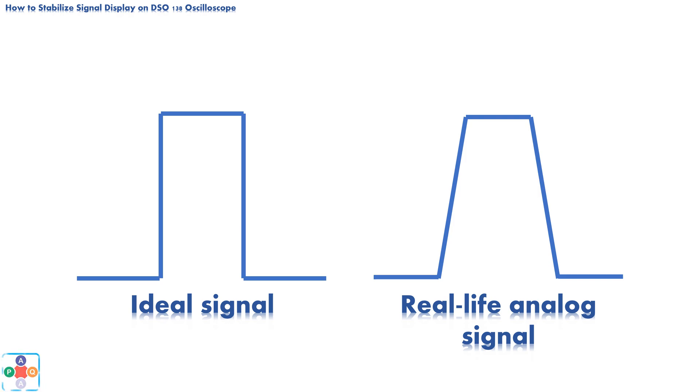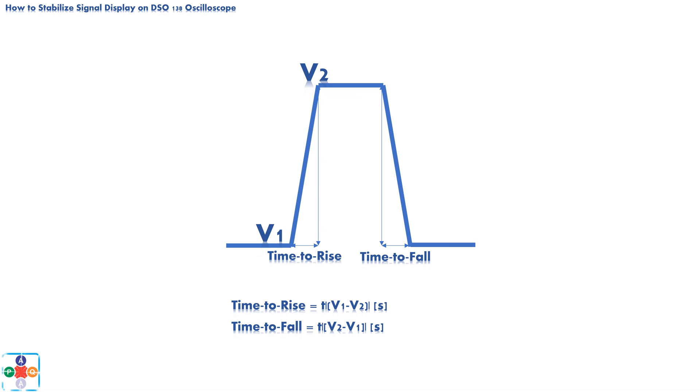This leads us to fourth most important characteristic of the square signal, time to rise and time to fall. Time to rise is the time that takes for the signal to change from the point with lowest potential to the point with highest potential.